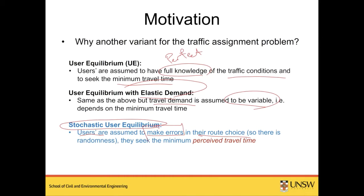There is some level of randomness in the route choice behavior of users. Because they may not necessarily know the correct or true travel time of different routes, instead of saying travelers minimize their travel time, we introduce the notion of perceived travel time. After lockdown is lifted, I don't exactly know how long it takes from home to UNSW — sometimes it's 15 minutes, sometimes 20. I only have a perception of that travel time, so I believe I'm minimizing the perceived travel time rather than the actual travel time.